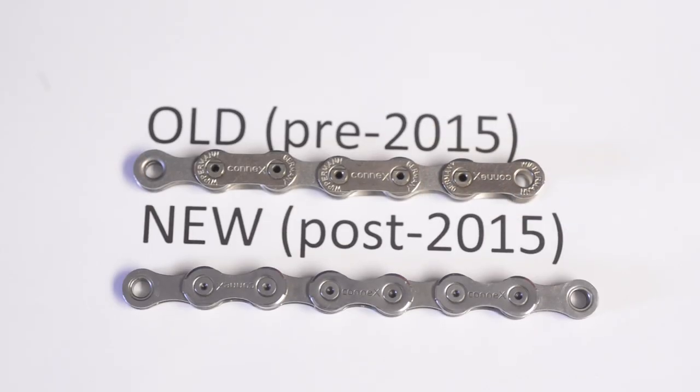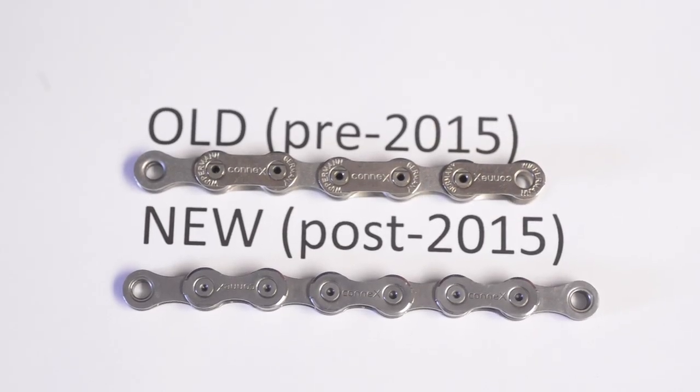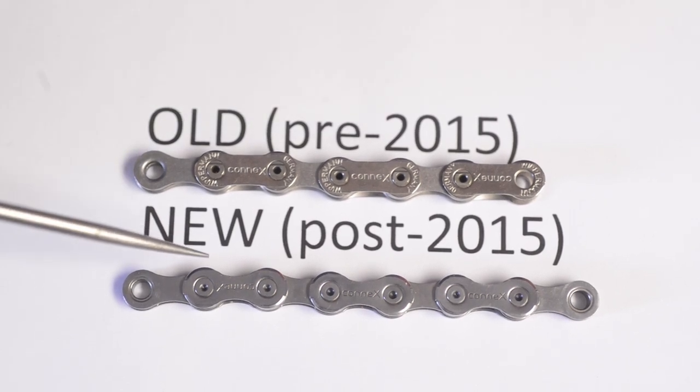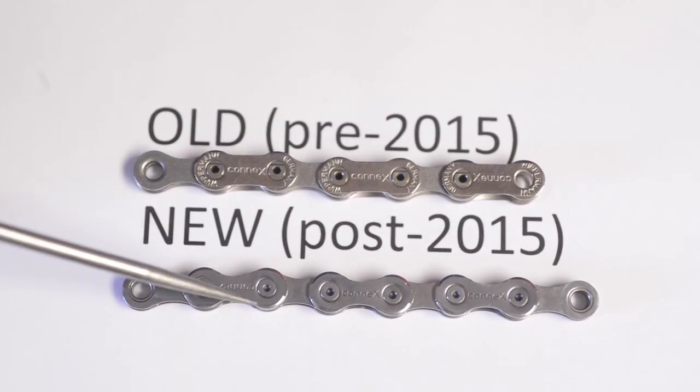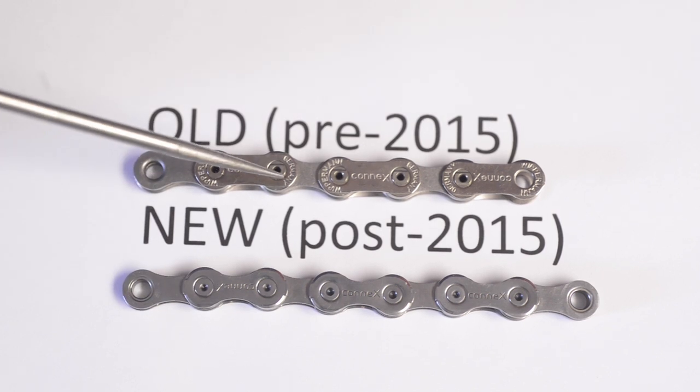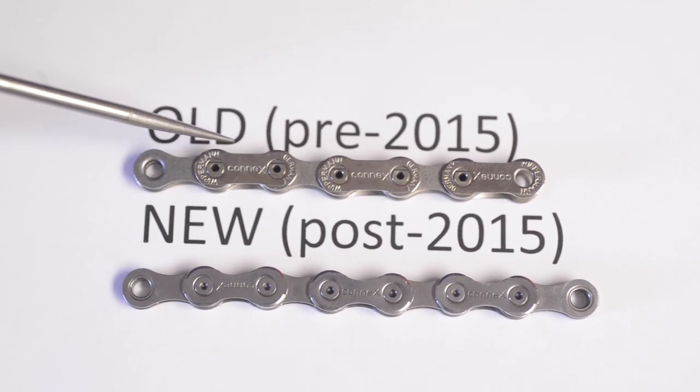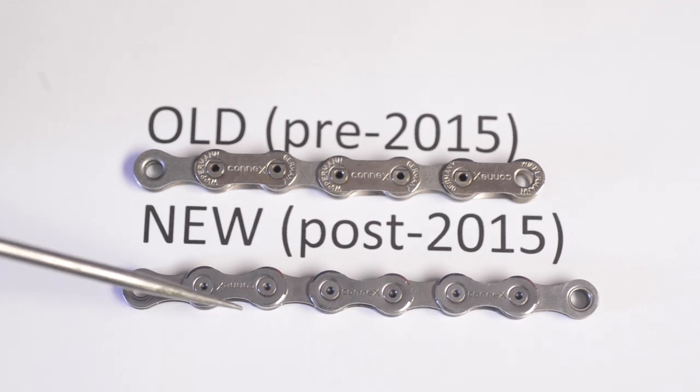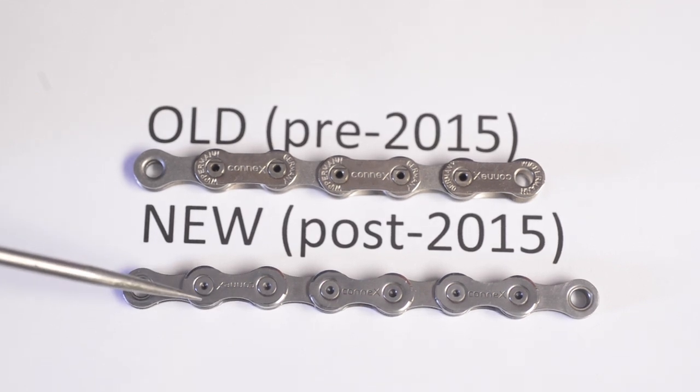The new Connex chains are considerably different from the previous edition. The first thing that you'll notice is the sculpted shape of the chain as compared to the more blocky shape of the previous editions. That will save about 20 grams a chain.